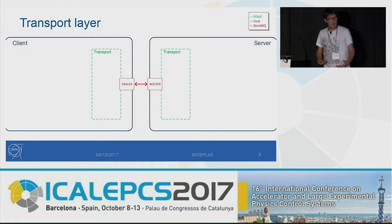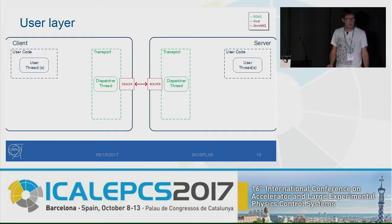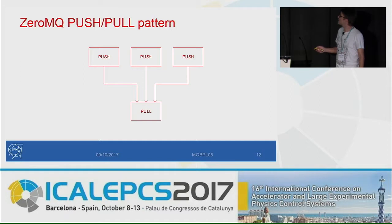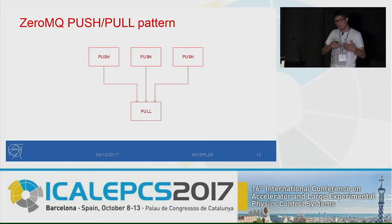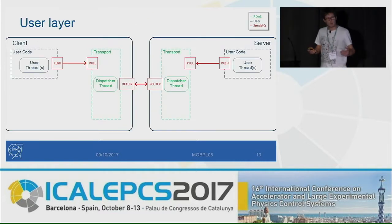The transport layer is very simple. It consists of a single thread we call the dispatcher thread. The responsibility of this thread is only to dispatch messages — it doesn't do any processing, it doesn't do any serialization. We also have user code — user logic and user threads. To receive messages from the user, we use another 0MQ pattern called push-pull. Push-pull is unidirectional: you can create many push-sockets, and all those push-sockets push messages to a sink — a pull-socket in this case. This is very convenient when you want many threads sending messages to a single entity, which is why we use this to allow all user threads to send messages to the transport.